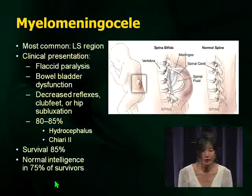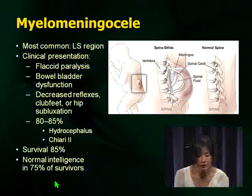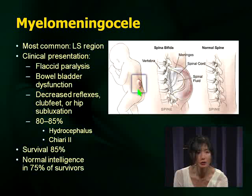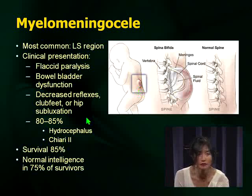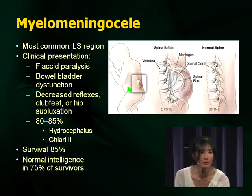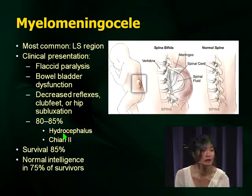Myelomeningocele — that was the picture we saw earlier. Remember that this is a defect in the covering of the spinal cord, and the important thing to remember is there's exposure and infection risk. For examination purposes, remember that there are associated findings — examiners love associations. They'll give you a scenario of a child with a certain problem and ask what it might be associated with. In this case, remember hydrocephalus and Chiari 2 malformations. Remember it's hydrocephalus in Chiari 2, not 1.